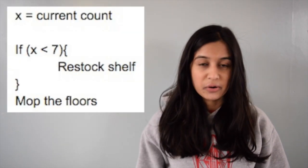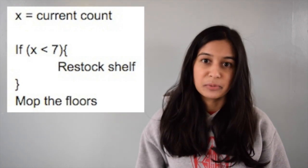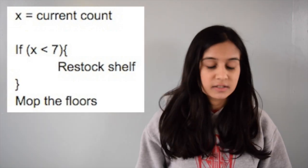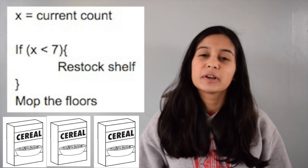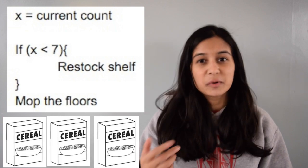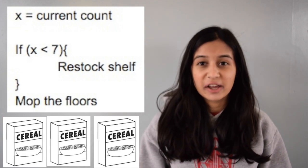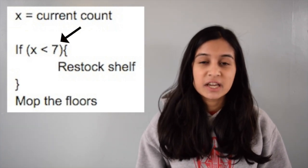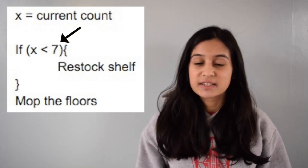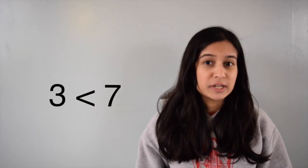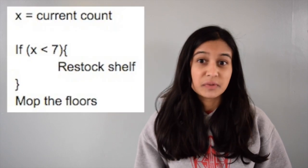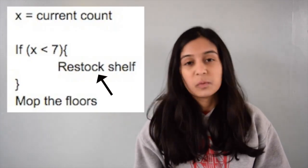Looking at some pseudocode for the cereal box example, suppose we counted three boxes. If we were in the computer and we were chugging along and we approached this if statement, we would check to see if the condition is true. Three is less than seven, therefore a certain action will be carried out — in this case, we will restock the shelves.